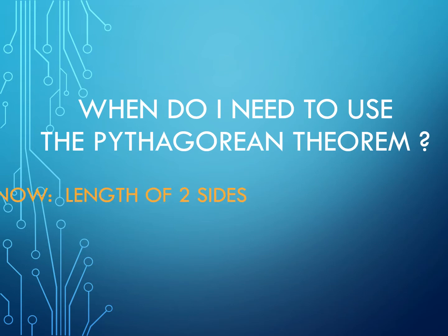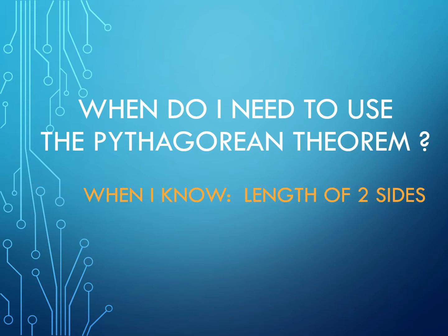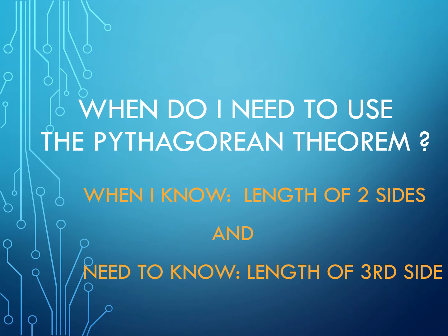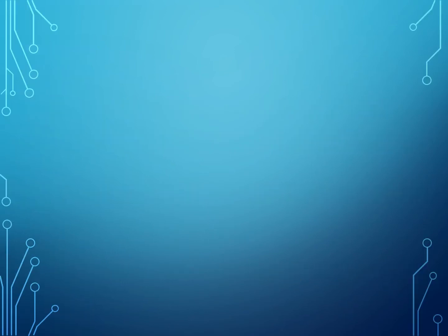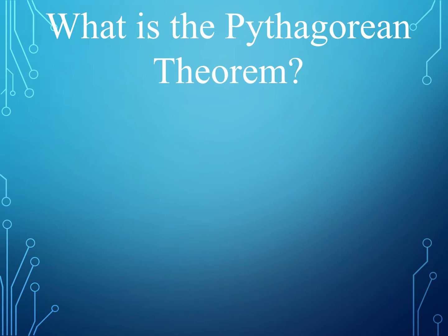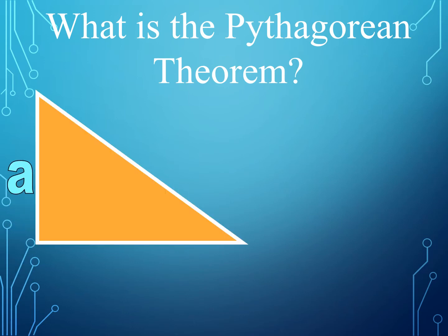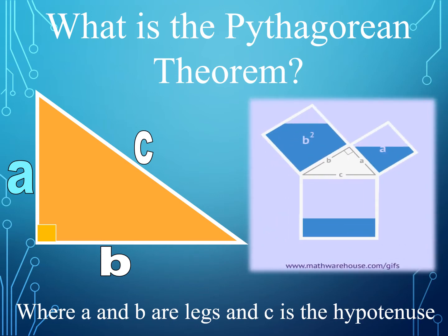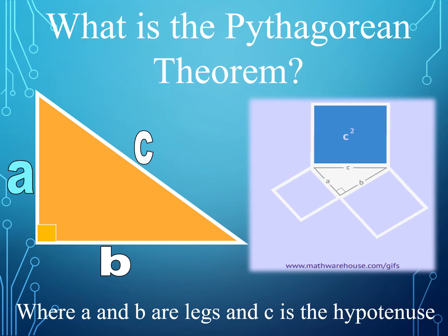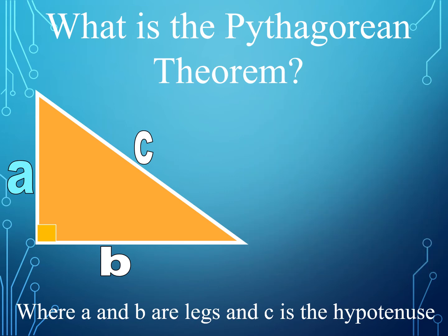When do I need to use the Pythagorean Theorem? When I know the length of two sides and I need to know the length of the third side. The Pythagorean Theorem is only used for right triangles, where A and B are the legs and C is the hypotenuse. As you can see in the illustration, C squared is equal to A squared plus B squared.